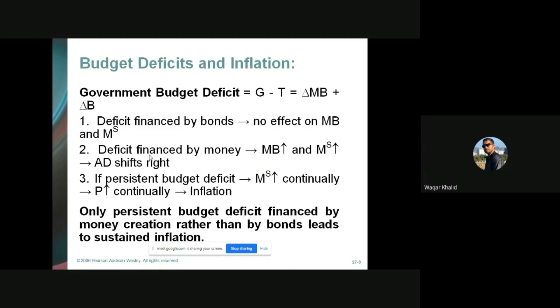There are two ways to pay for spending. Number one: raise revenue by working and earning money to pay a bill. Number two: borrowing from a friend, neighbor, or someone else. These are the two options available — either earn money through work or borrow from someone else if no money is on hand.